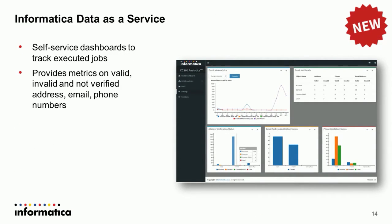Next is Data as a Service, which has been part of the Informatica cloud platform for a while. It helps with things like contact validation — for example, validating postal addresses, emails, or phone numbers using easy-to-use wizards. With R25, we've introduced new dashboards so you can track the executed job status and metrics around data validity — how much data is valid, what is invalid — giving you a nice dashboard with bar charts for a better idea of the data you're dealing with.